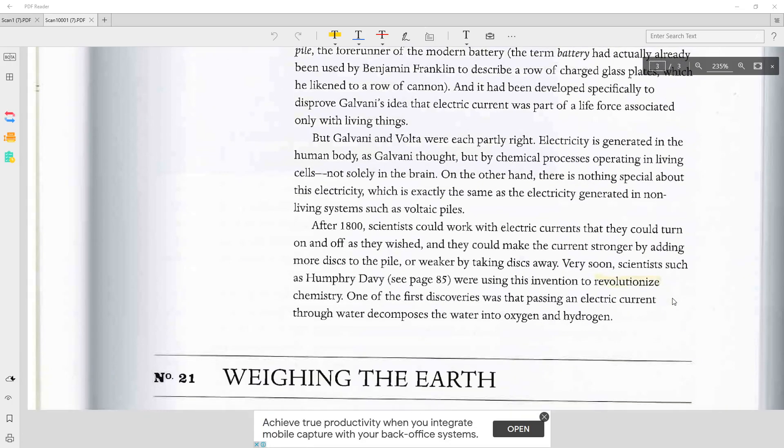But Galvani and Volta were each partly right. Electricity is generated in the human body, as Galvani thought, but by chemical processes operating in living cells, not solely in the brain. On the other hand, there is nothing special about this electricity, which is exactly the same as the electricity generated in non-living systems such as Voltaic Piles.